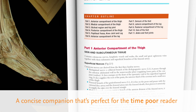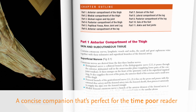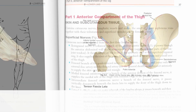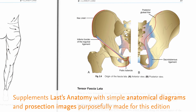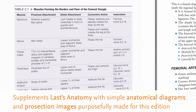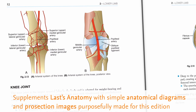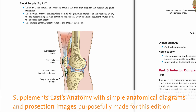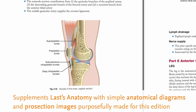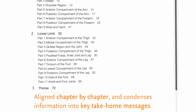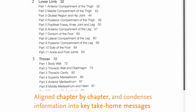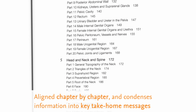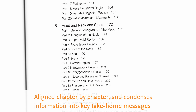Surgical anatomy is a heavy topic. This book provides a concise companion for the time-poor reader. It is designed to be used in conjunction with Last's Anatomy and supplemented by simple anatomical diagrams and per-section photos purposefully made for this edition. You will find it is aligned exactly chapter by chapter with Last's Anatomy and condenses the wealth of information into key technical messages.